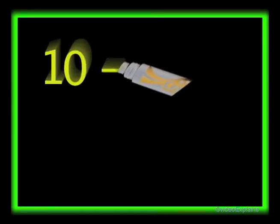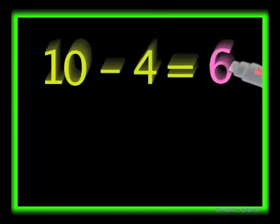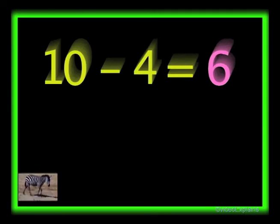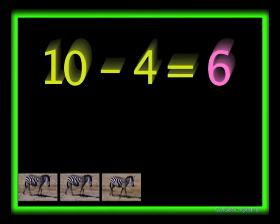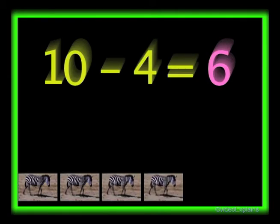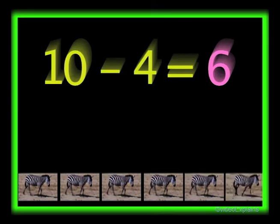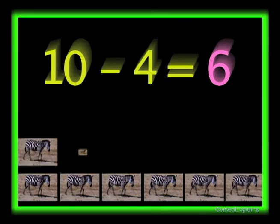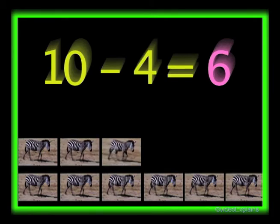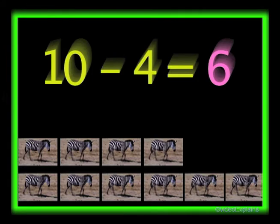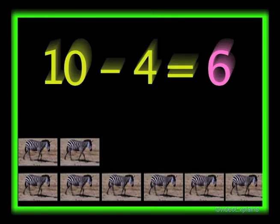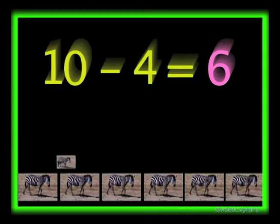Ten minus four equals six. There are ten zebras: one, two, three, four, five, six, seven, eight, nine, and ten. If four zebras walk away, then six zebras will be left. One, two, three, and four. So ten minus four equals six.